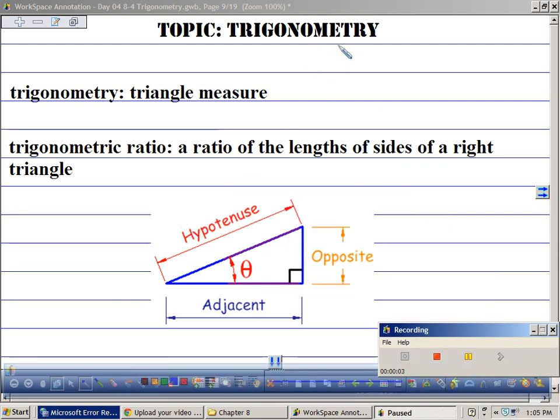Okay, so let's talk about trigonometry. The most basics of trigonometry is the fact that, first of all, we have a right triangle. Second of all, we're talking about an angle.